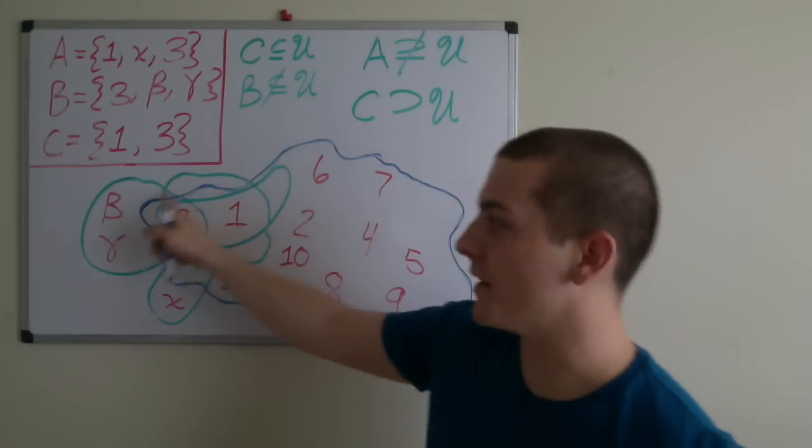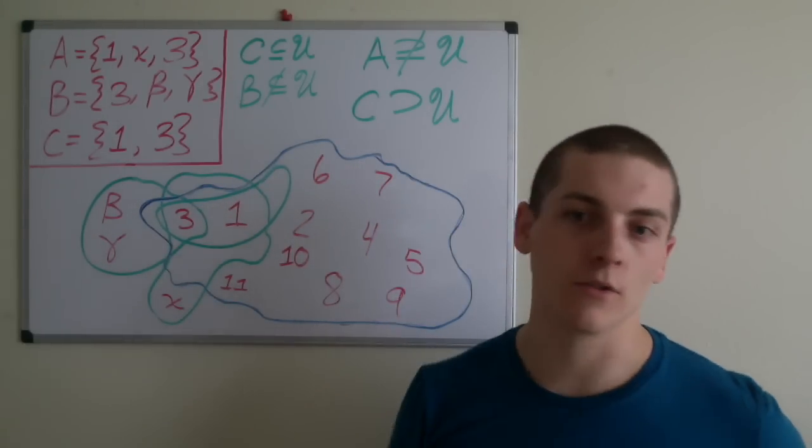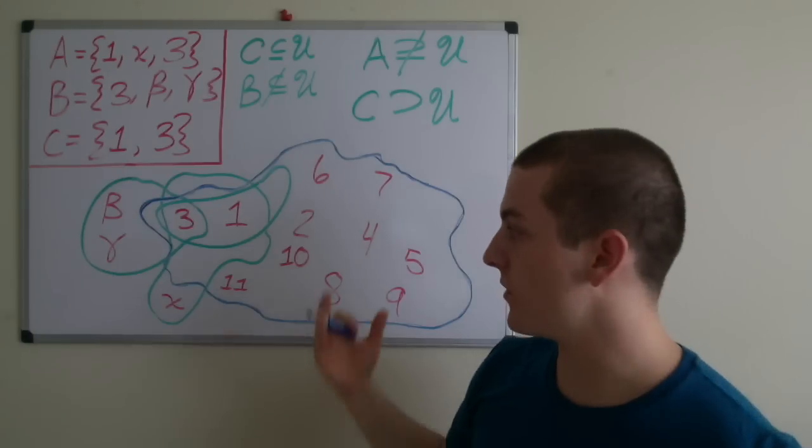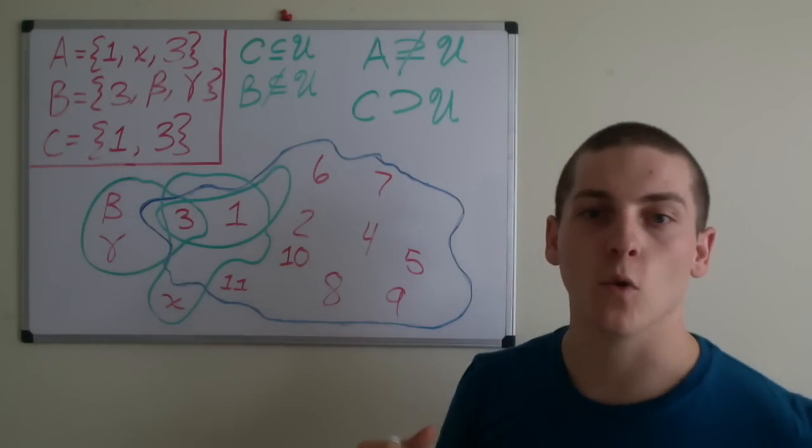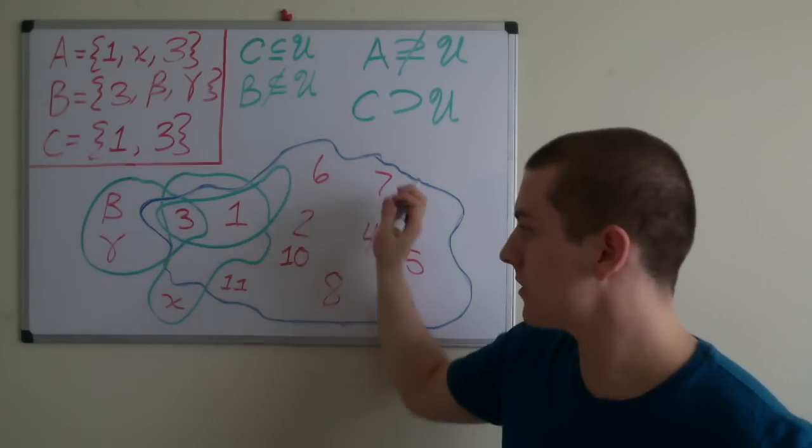So if you look at this blue line here, this represents our universal set. We've defined it to be the integers from 1 to 11. That's 1, 2, 3, 4, all the way up to 11.